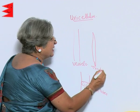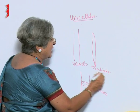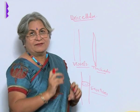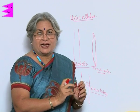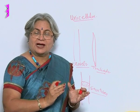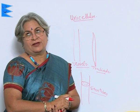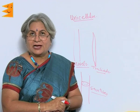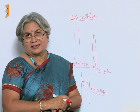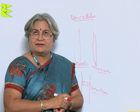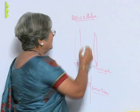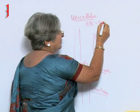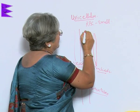So, like this, in the case of both plants and animals, there are specialized cells which have a specific shape and structure so that they can perform a specific function. And not only the shapes vary — actually even the size varies. There are some cells which are very small; for example, RBC is a small cell.